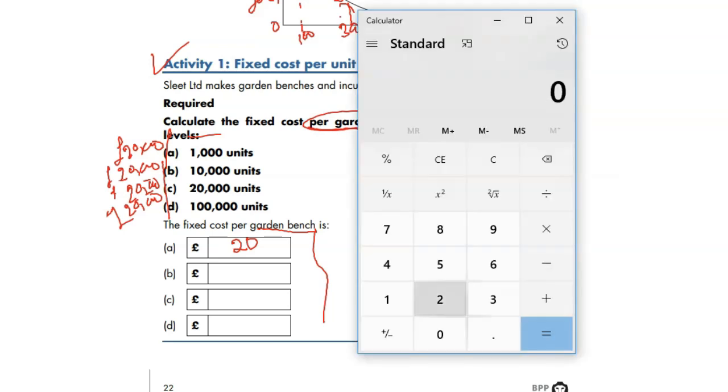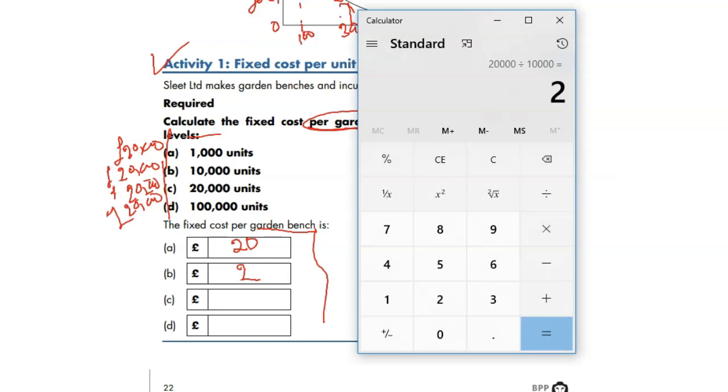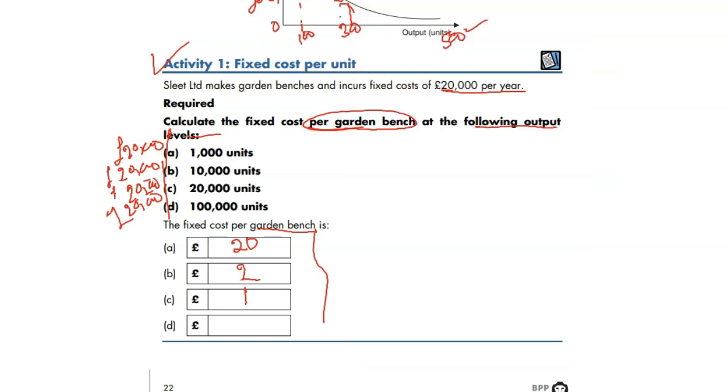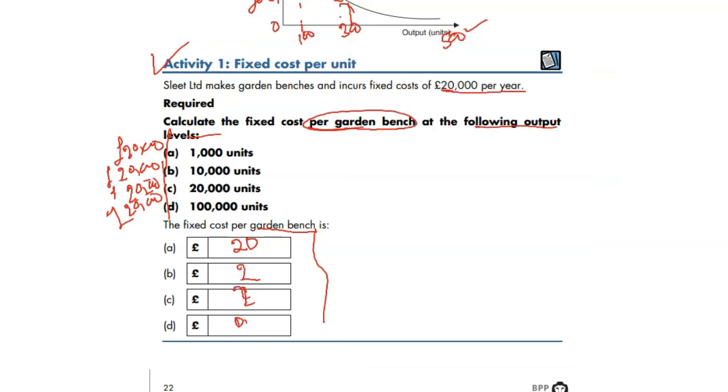Fixed cost per unit. So 20,000 divided by 10,000 equals 2. It's going to be 1, but I'm just doing it for you. 20,000 divided by 20,000 equals 1, and 20,000 divided by 100,000 - you can hear the noise of my pen - equals 0.2. That's how you find the cost per unit.